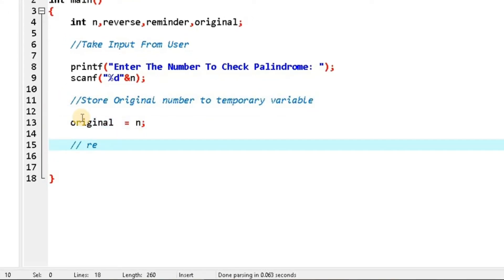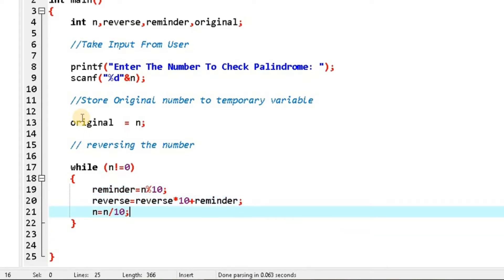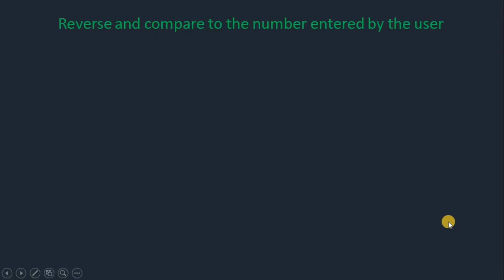I have stored the entered value in a temporary variable named 'original,' and I have completed the while loop. After that, we have to compare the number that is entered by the user with the reversed number. We have stored that original number in the 'original' variable.